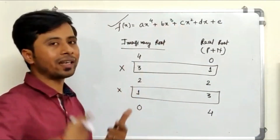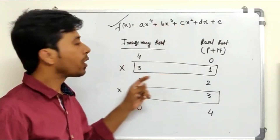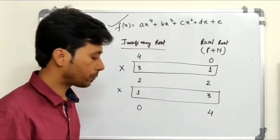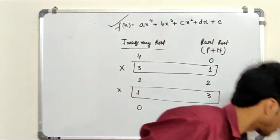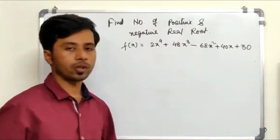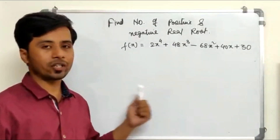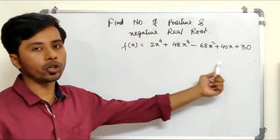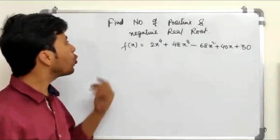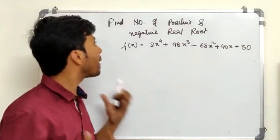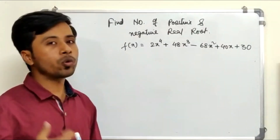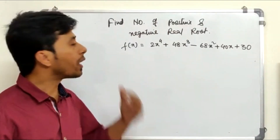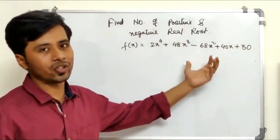Now using this understanding, we will find the number of positive real roots and negative real roots using Descartes' rule of signs. You can see the question on the board: find the number of positive and negative real roots for the given polynomial. To find positive real roots, you need to count the number of sign changes in the polynomial.